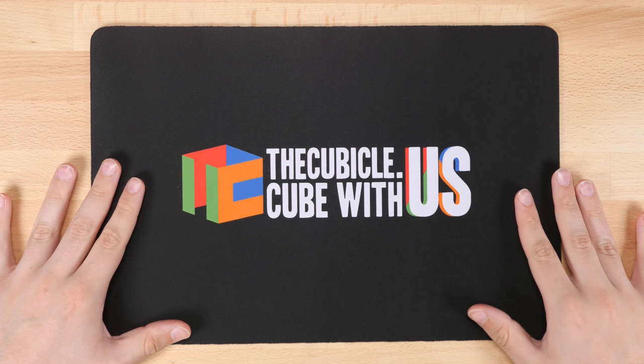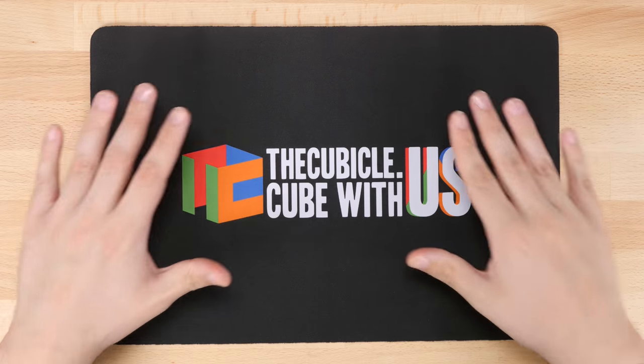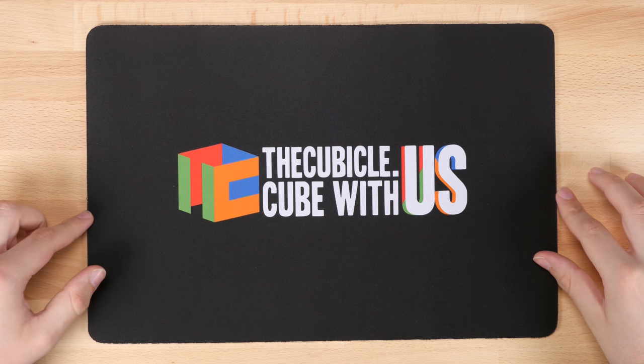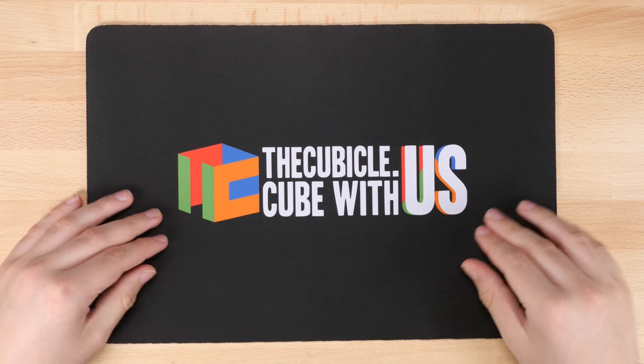Alright, so the first item in the box is this cube with TheCubicle.us stackmat. So this is the newest stack mat that the cubicle has come out with. If you guys are unaware, this cube with TheCubicle.us design is basically centered around the lawsuit that the cubicle is currently having with Rubix. It's still ongoing.